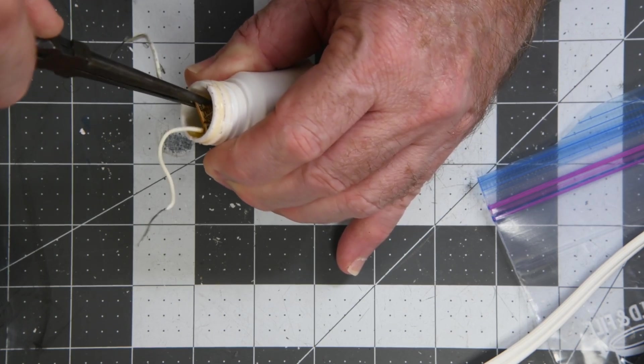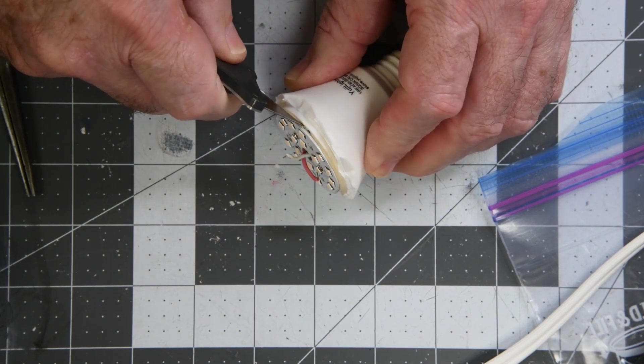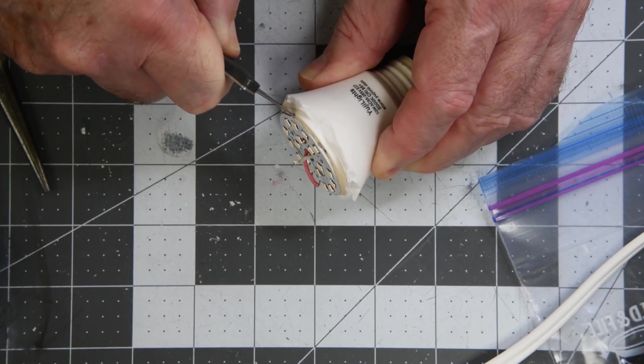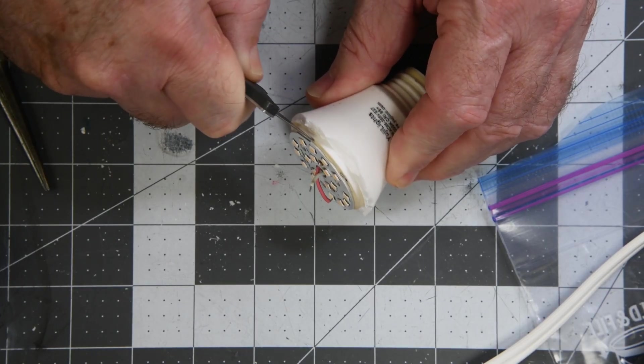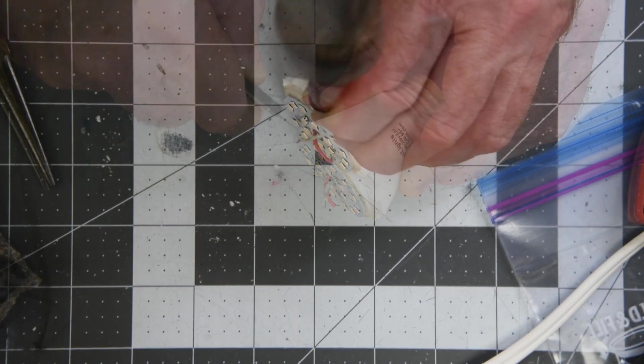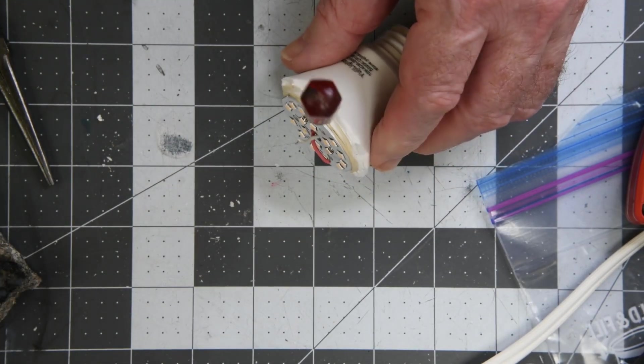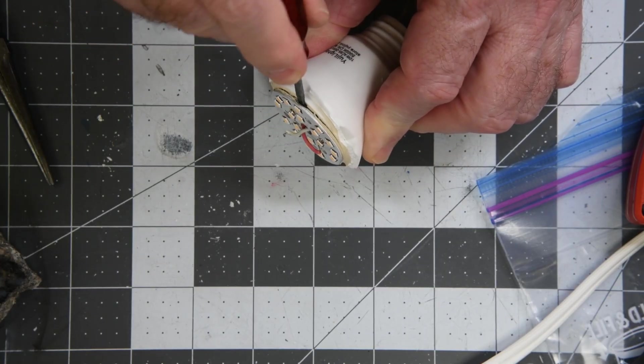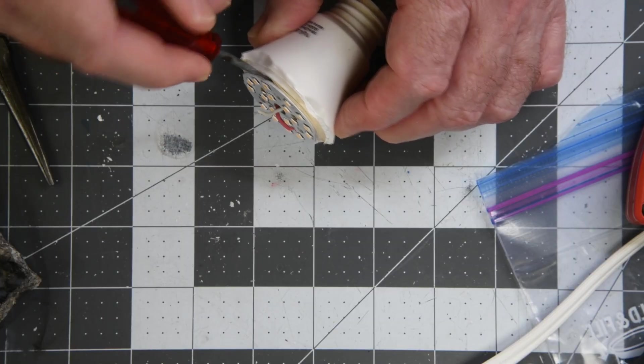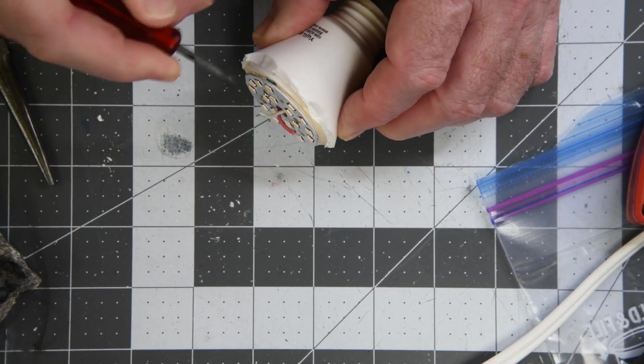Nope, doesn't look like it. Let me see if I can remove the LED circuit board. I'll cut around the edges with a knife and see if I can cut through the silicone. Knife's just not going very deep. I don't really want to bend the circuit board as that would certainly damage the LEDs.